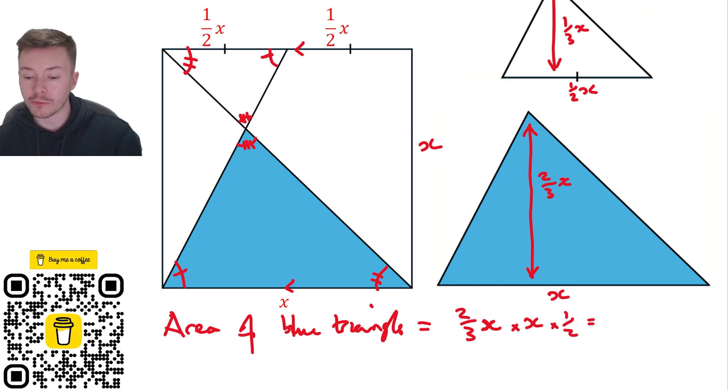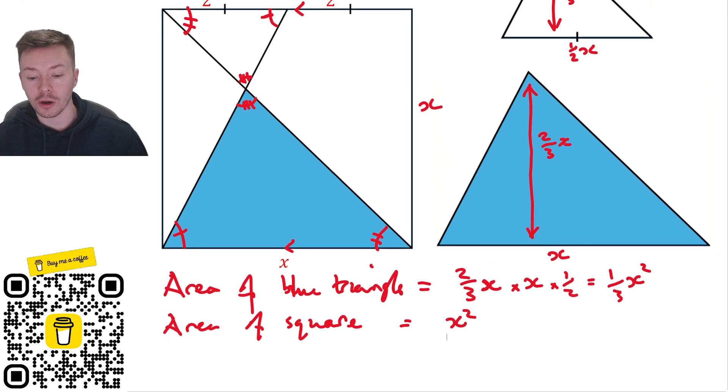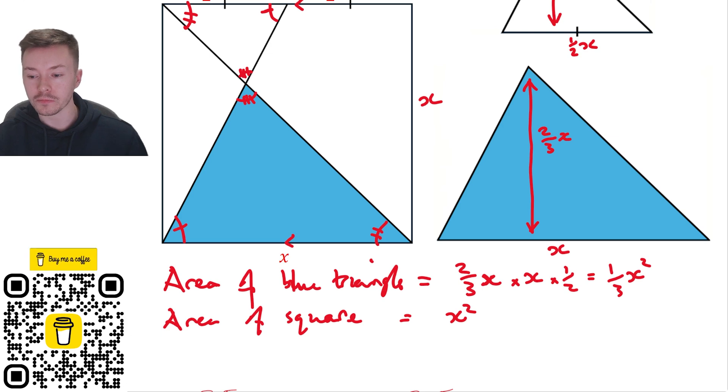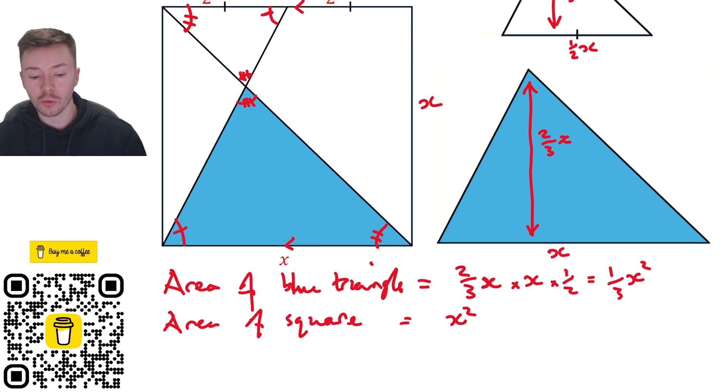Which gives me two over six, which is one third x squared. Now the area of the square, well, that's easy, that's x squared. And what fraction of the square then is blue? Well, if we do one third x squared divided by x squared, we will get the answer, which is going to work out quite nicely. So a third x squared divided by x squared, because we want a third of, well, we want the fraction of the square, gives you one third, and so that's the answer.